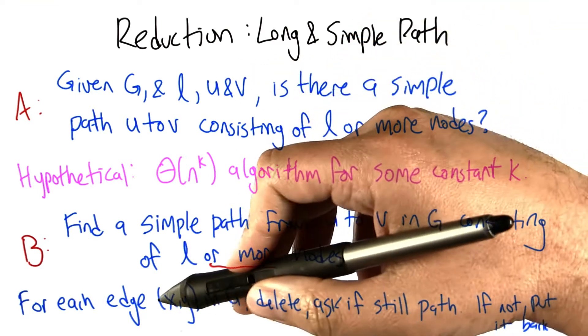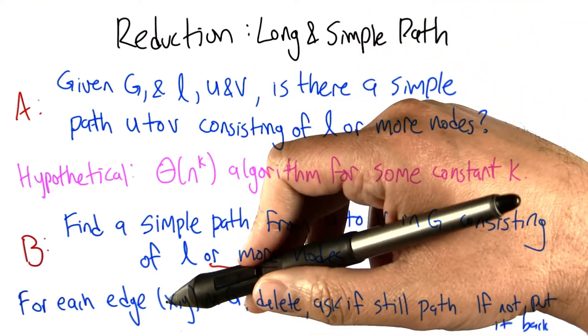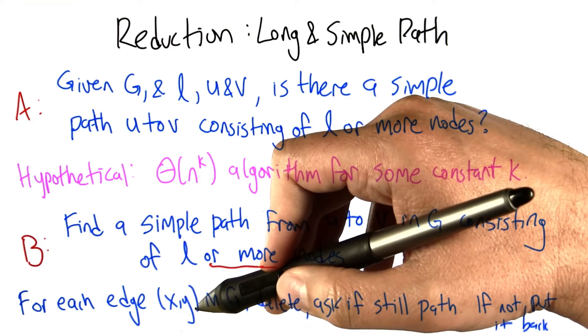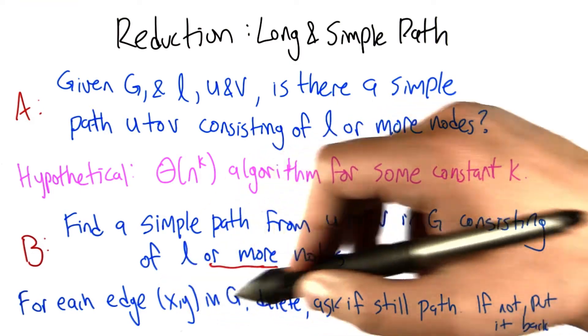And what we can do is for each edge in the graph say, what if we delete that edge? Is there still a path? And if the answer is yes, then we just leave it deleted.